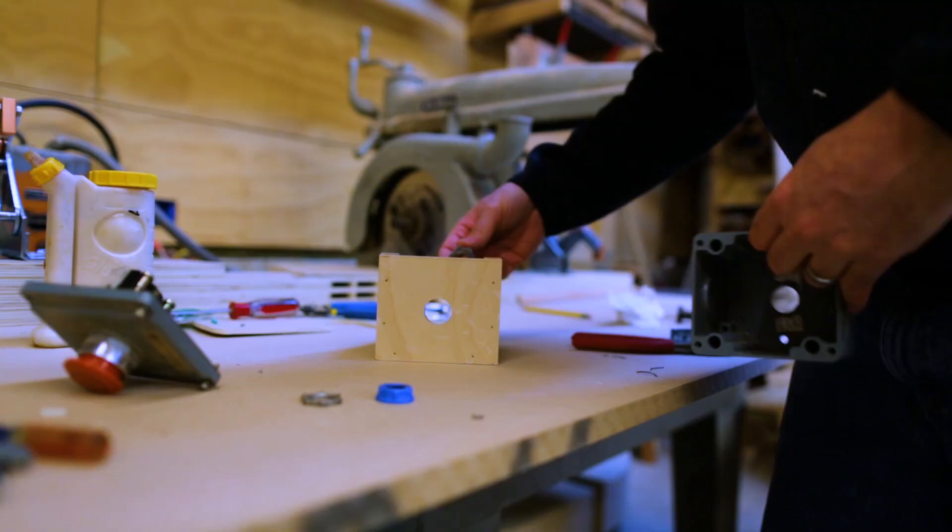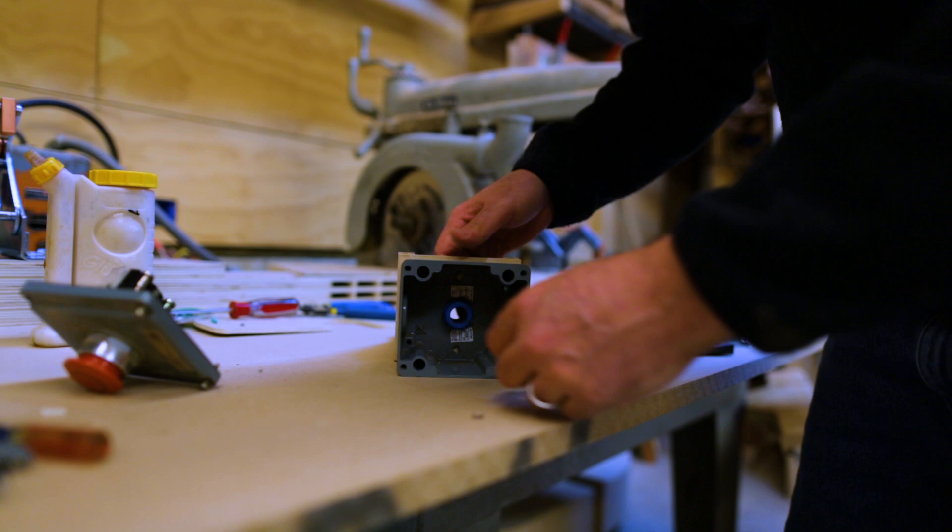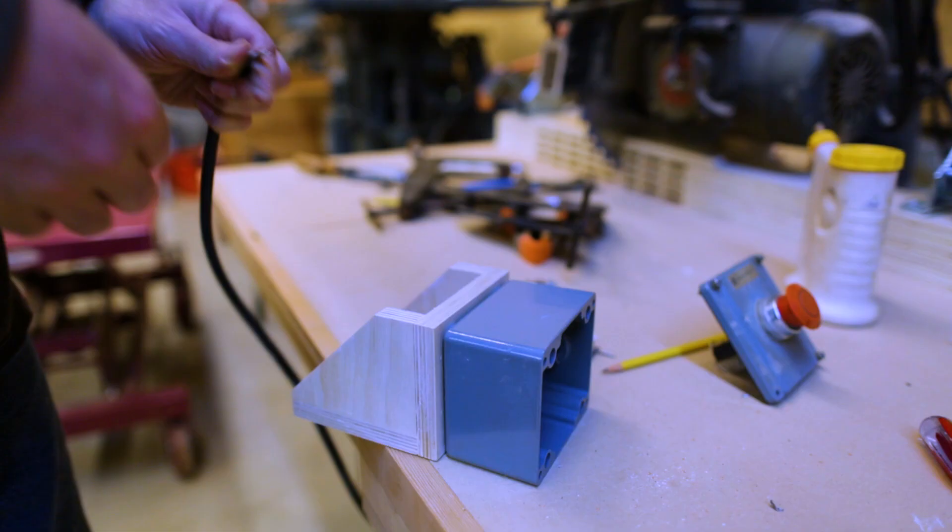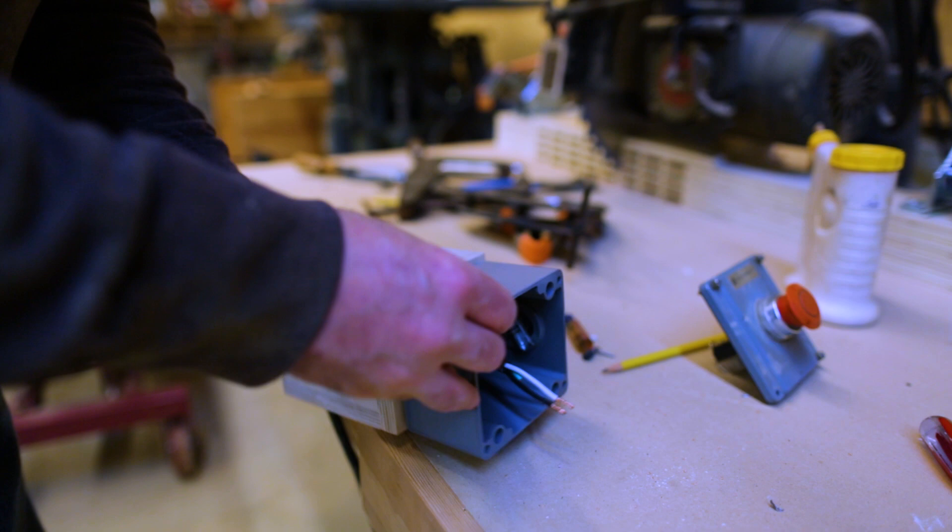Then I could attach the box to the bracket. I used the little piece of conduit to help with that. And I just screwed the box to the vertical face of the bracket. And I could re-thread the end of my wire into the box and reattach the switch. Then I had a switch on a bracket that I could attach to the underside of the table.